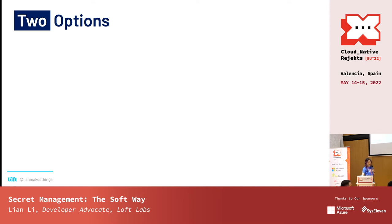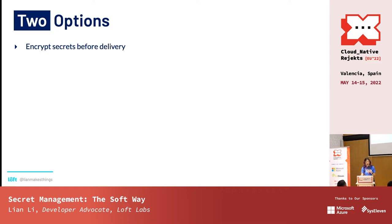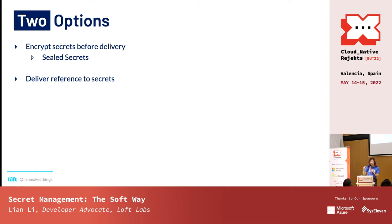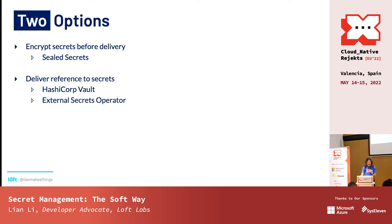For the solution, we have two options. We can either encrypt the secrets before we put them in the GitOps repository — so even if someone has access, they won't be able to read the contents. To do that, there's an open source tool called Sealed Secrets. Or we can deliver a reference to the secrets, storing the secrets somewhere else and only delivering a reference. To show that, I'll be using HashiCorp Vault and the External Secrets Operator, which works with Vault but also with other secret providers.